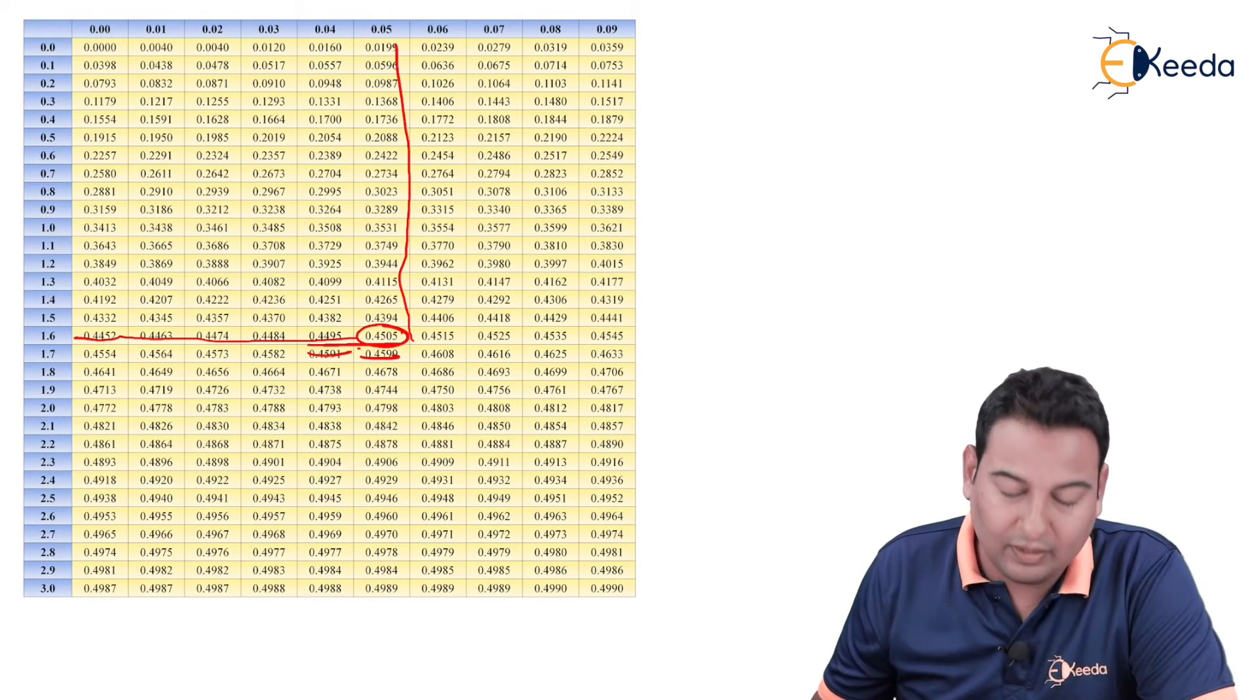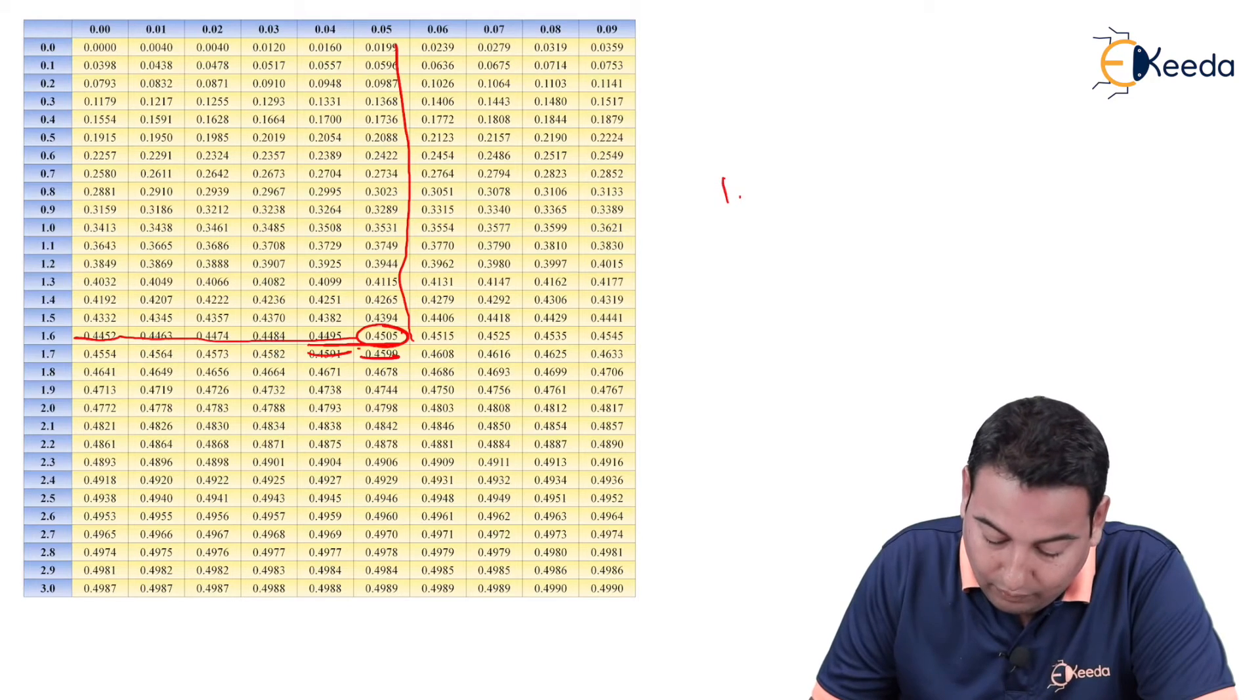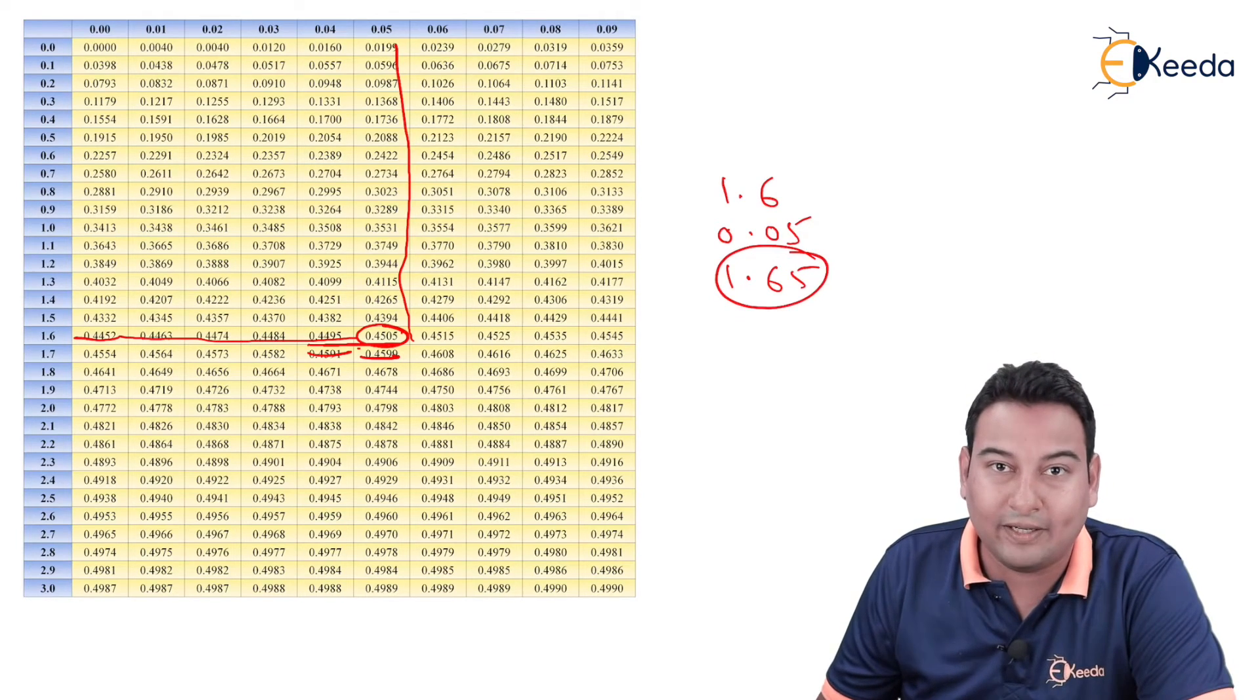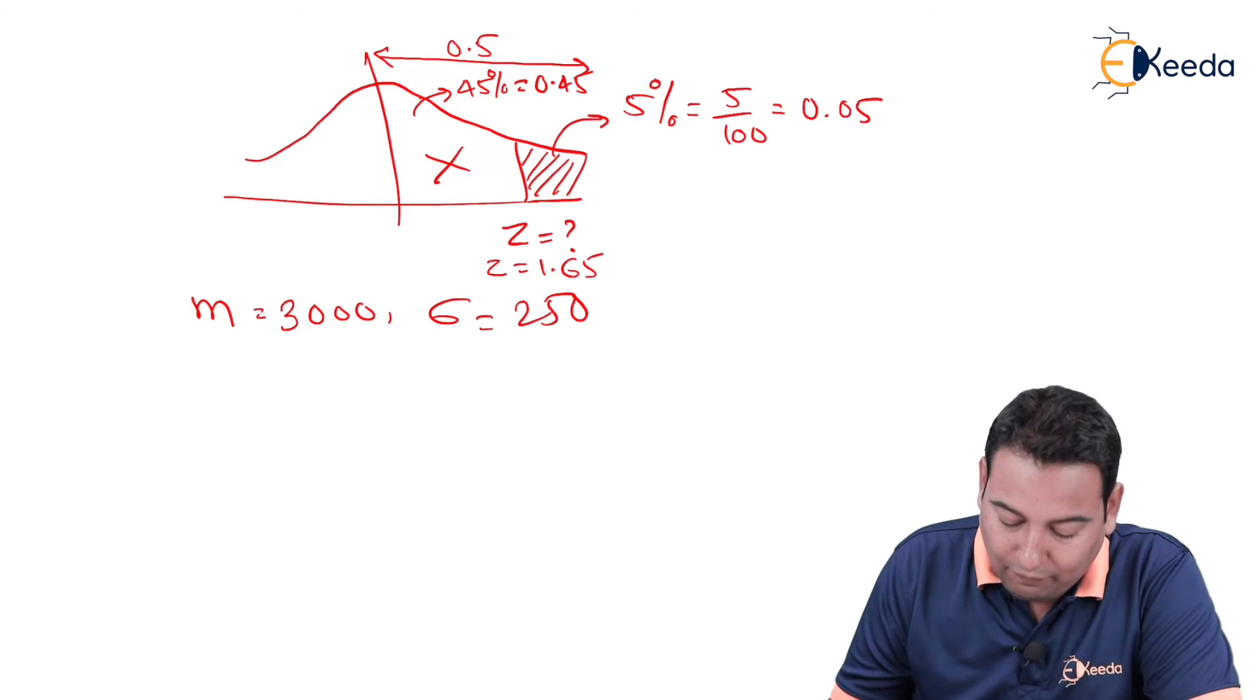This side it will be 1.6. On top it is 0.05. 1.6 plus 0.05, that is 1.65 is the value of Z. 1.65.